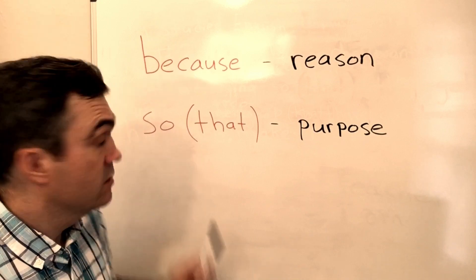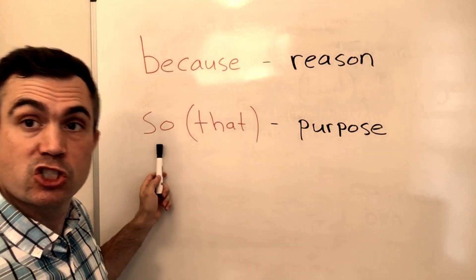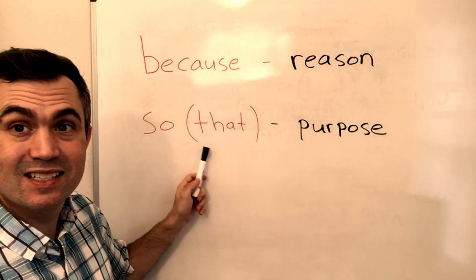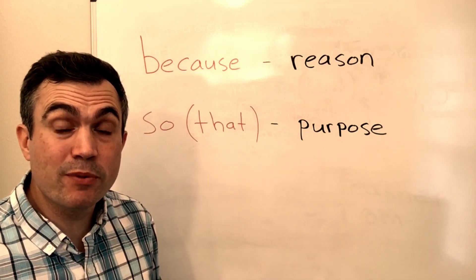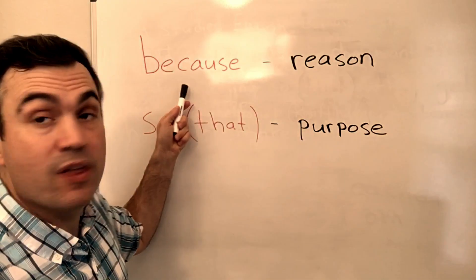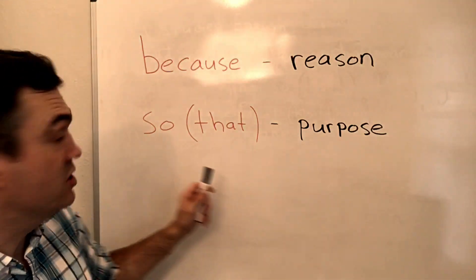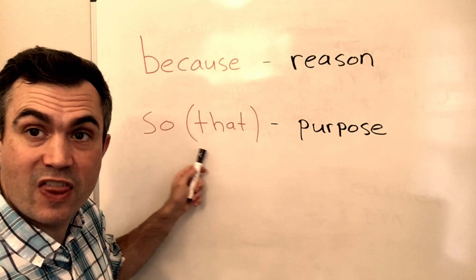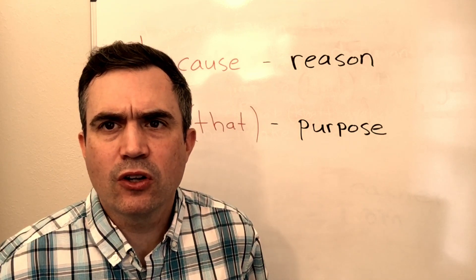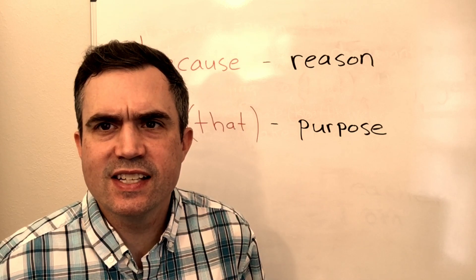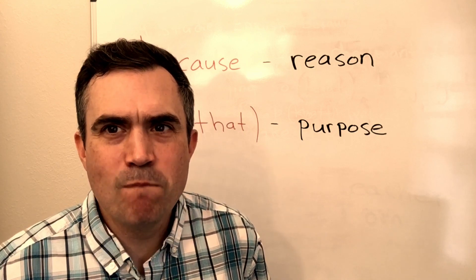So to review: 'because' is for a reason — the reason why. 'So' or 'so that' is for the purpose. We can start the adverbial clause of reason with 'because,' and we can start the adverbial clause of purpose using 'so' or 'so that.' Now give me 100 sentences using an adverbial clause of reason and 100 sentences using an adverbial clause with 'so' or 'so that.' You have five minutes — go!